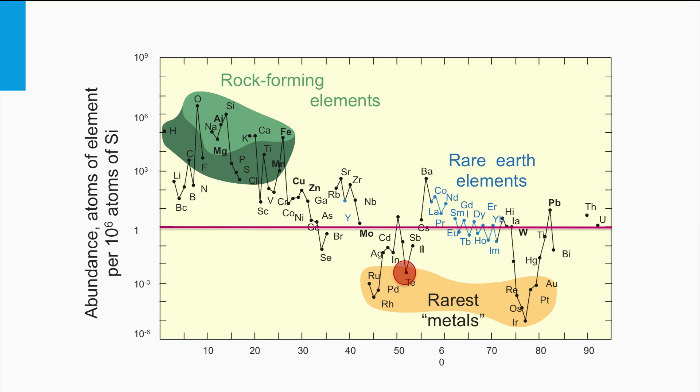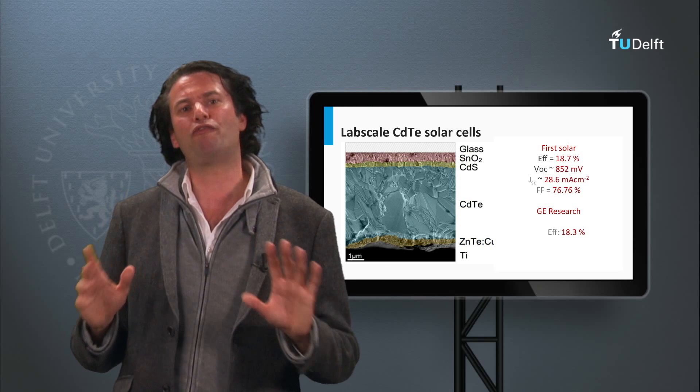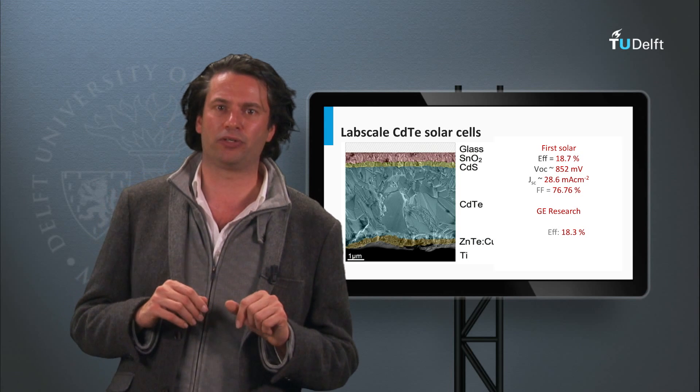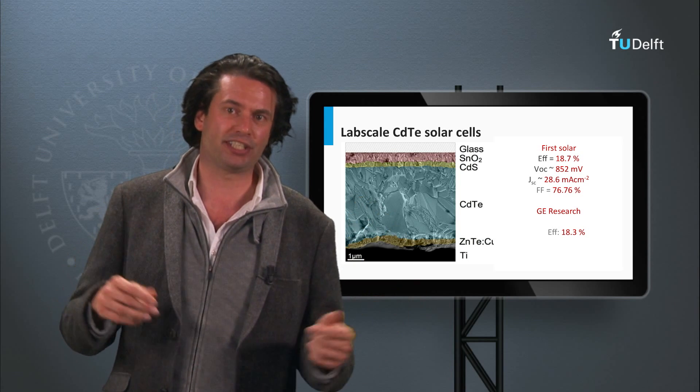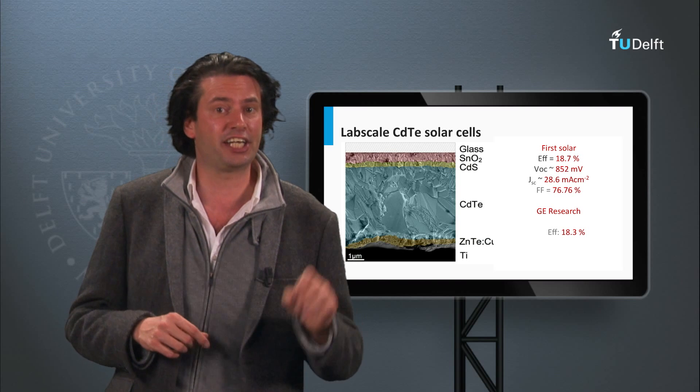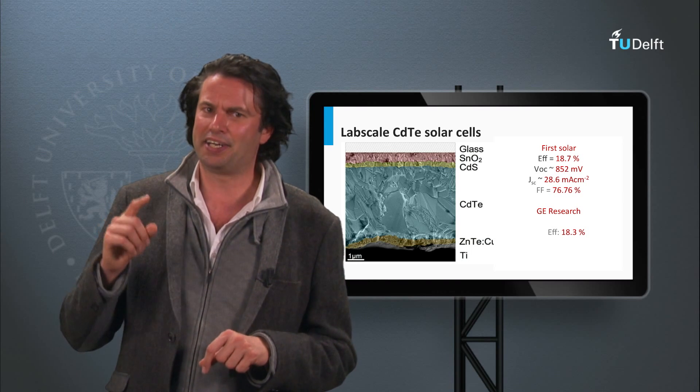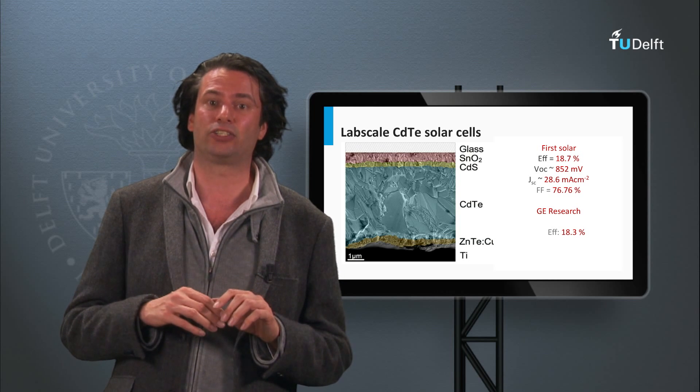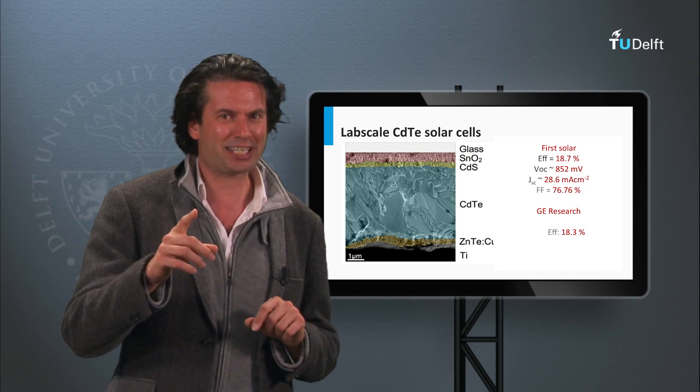So at this moment it is not clear to which extent the cadmium telluride PV technology might be limited by the tellurium supply. So far, we have discussed the inorganic thin film semiconductor materials like amorphous and nanocrystalline silicon, CIGS, and cadmium telluride solar cells. In the next block we are going to look at organic and dye-sensitized solar cells. See you in the next block!